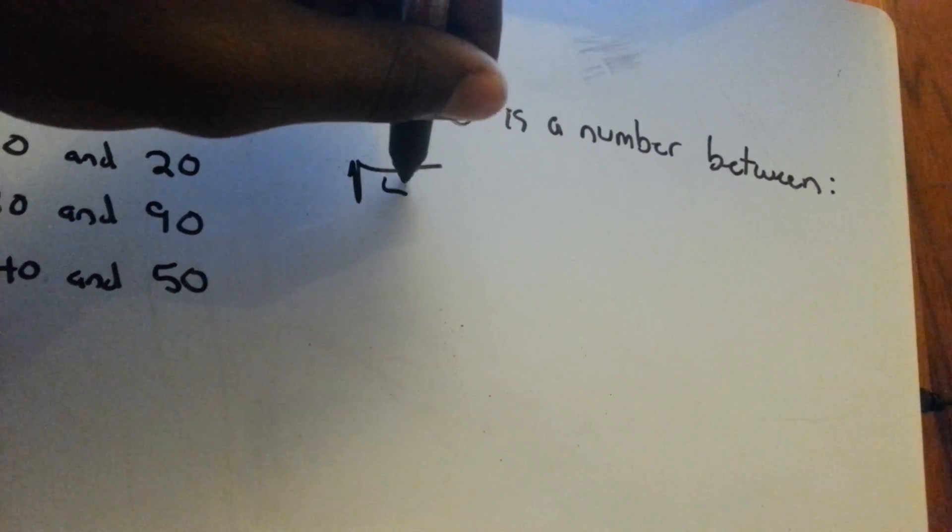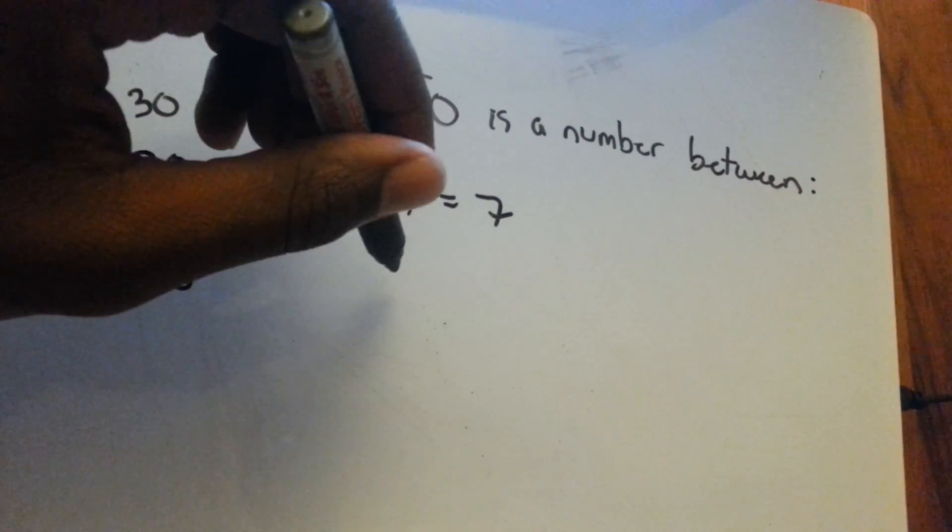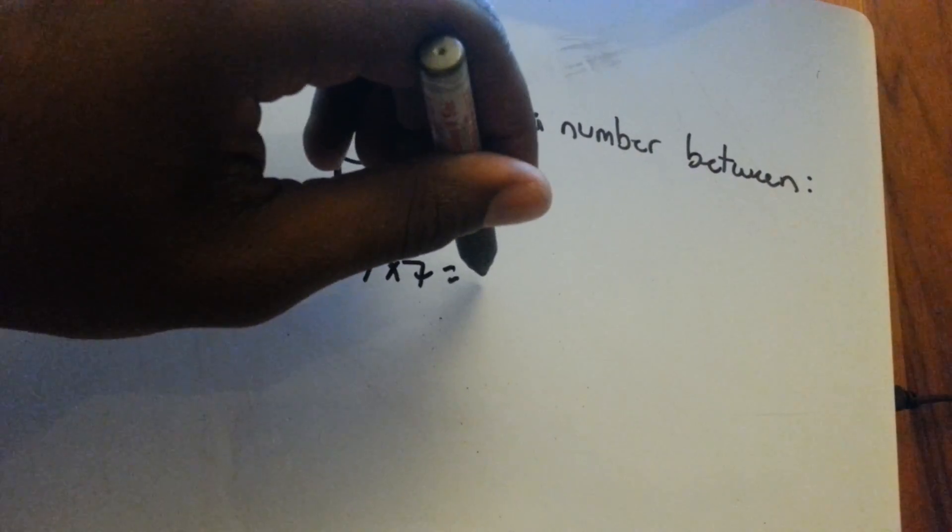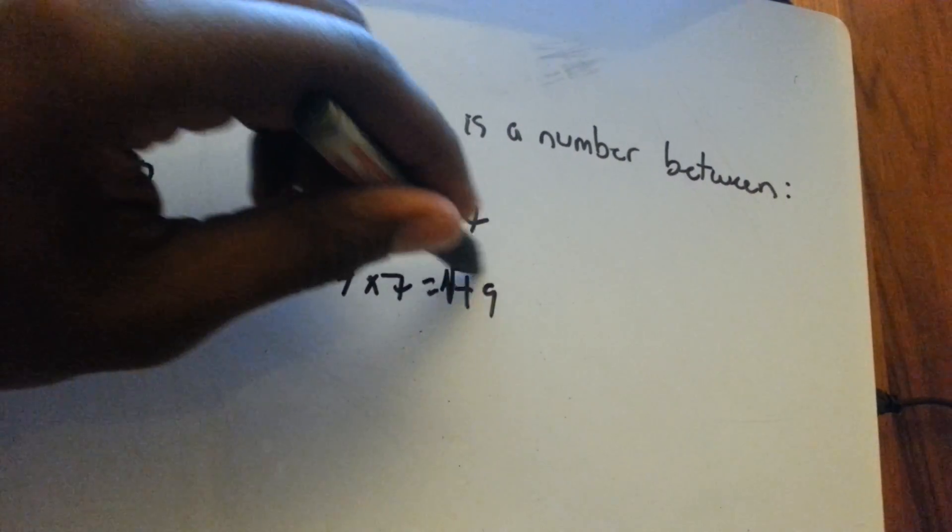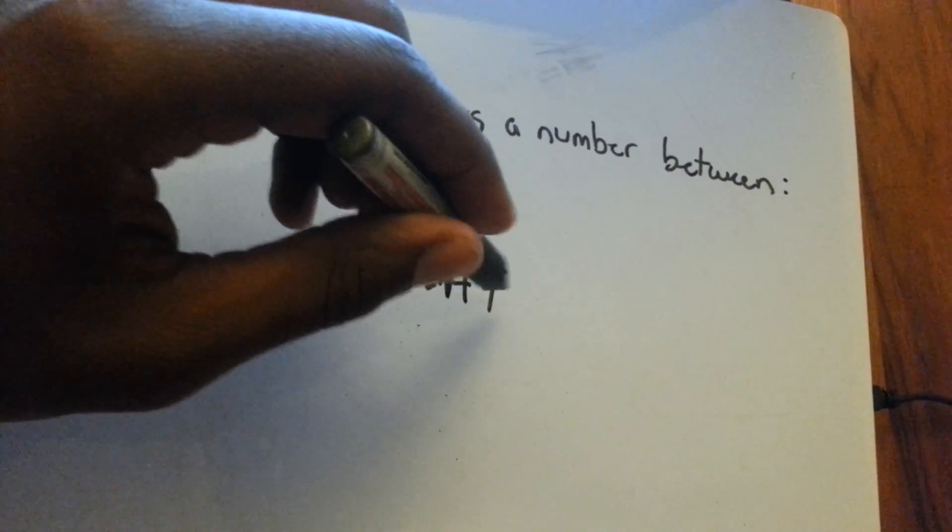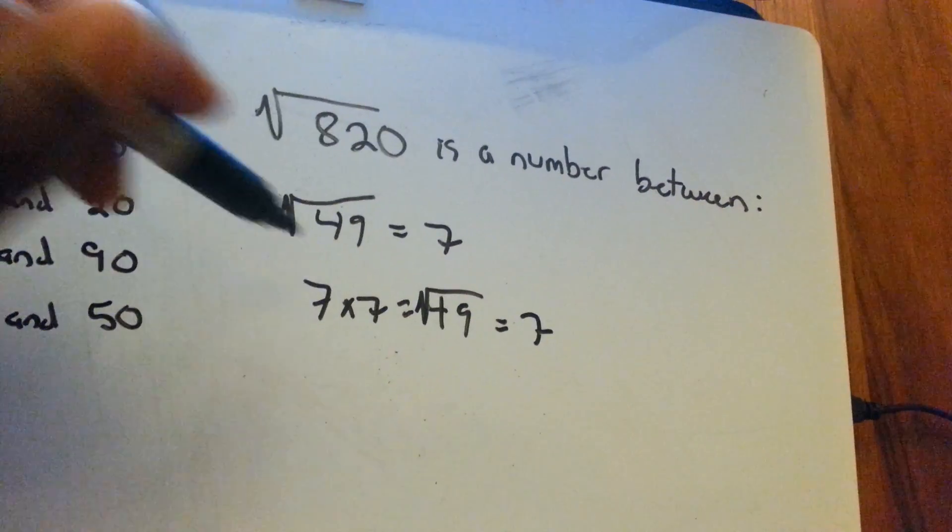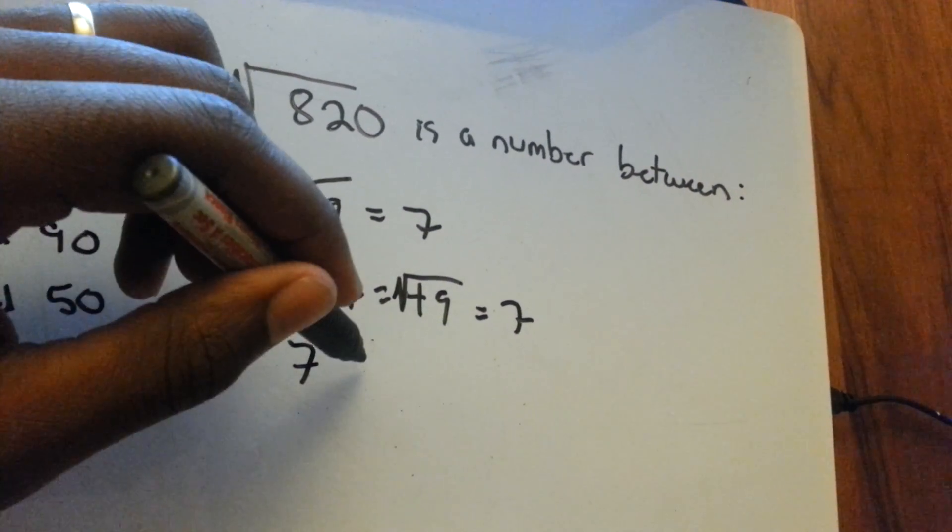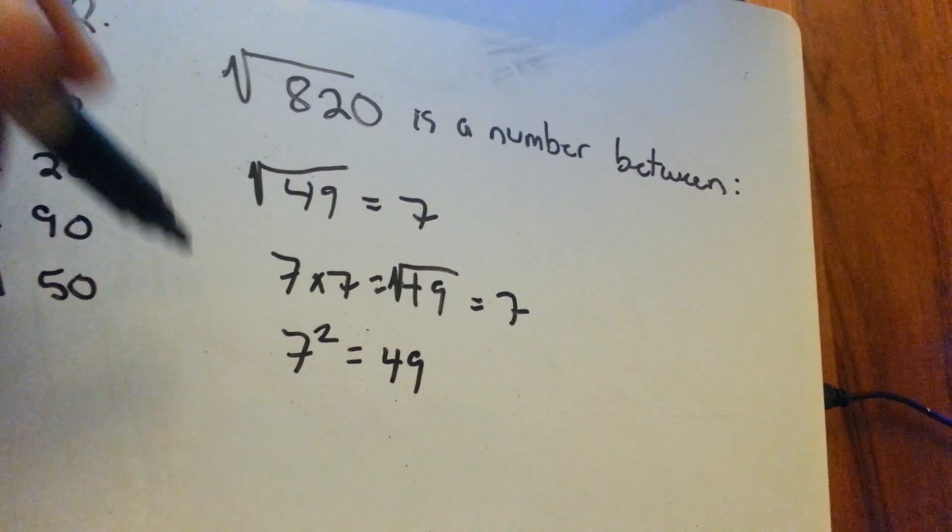The square root of 49 equals 7 because 7 times 7 equals 49. So the square root of 49 would be 7, or you could say 7 squared equals 49. That's the same thing.